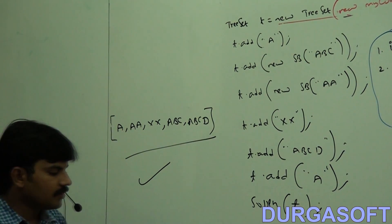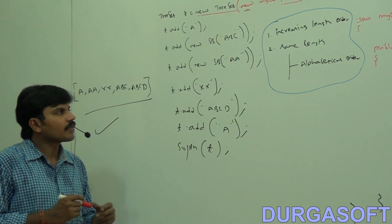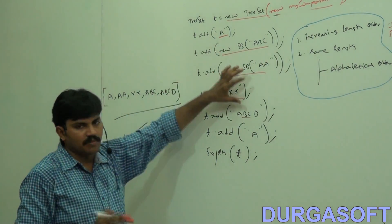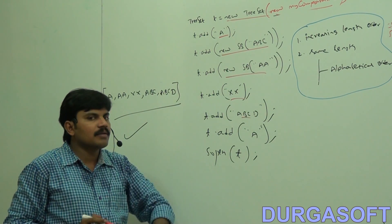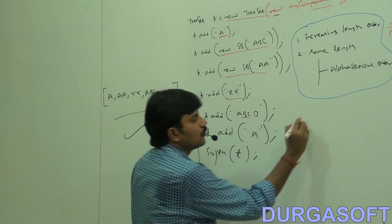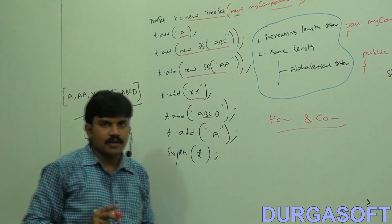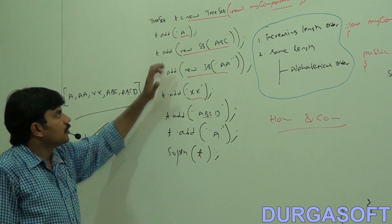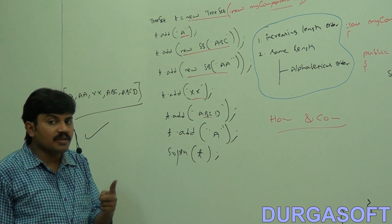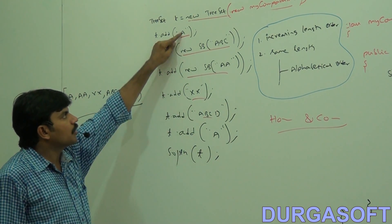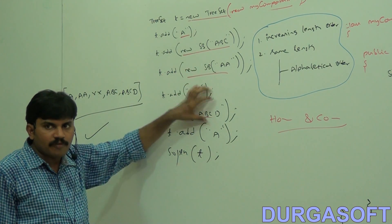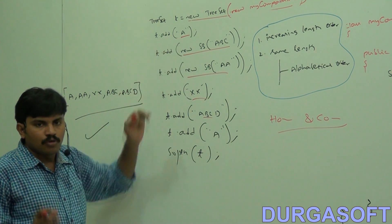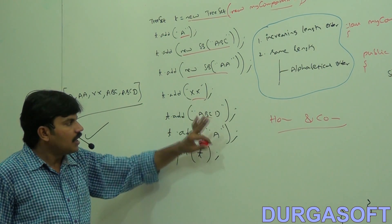Here is one important conclusion I want to make. Sometimes a String, sometimes a StringBuffer object we are adding. If we depend on default natural sorting order, compulsory the objects should be homogeneous and Comparable. But if we define our own sorting by Comparator, then the objects need not be homogeneous and need not be Comparable. In the last example, non-comparable objects were added; in this example, heterogeneous objects — String and StringBuffer — are being added.